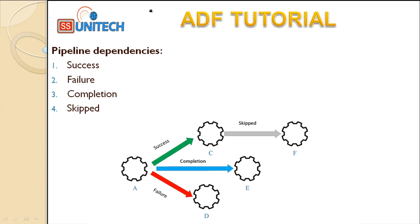Pipeline dependencies are mainly four types. The first is success, second is failure, third is completion, and fourth is skip. These four types of dependencies are available inside the pipeline.